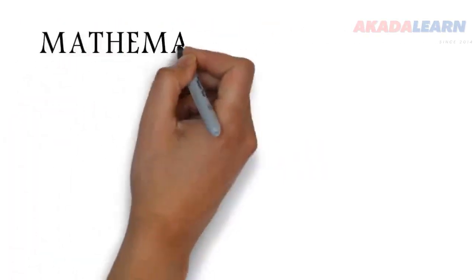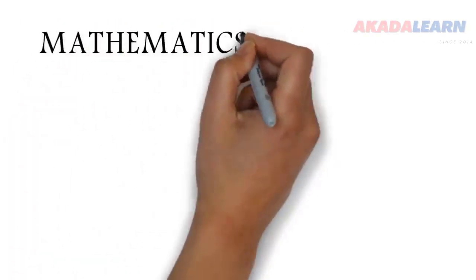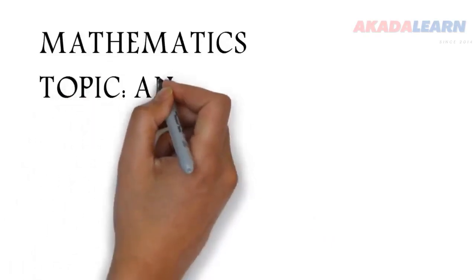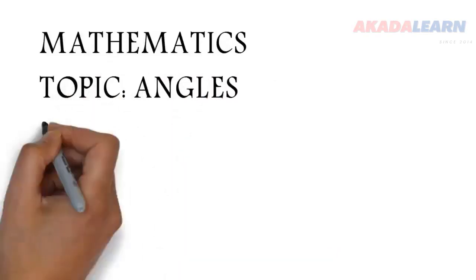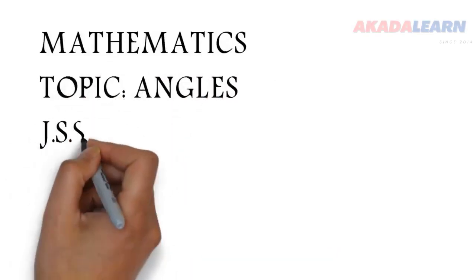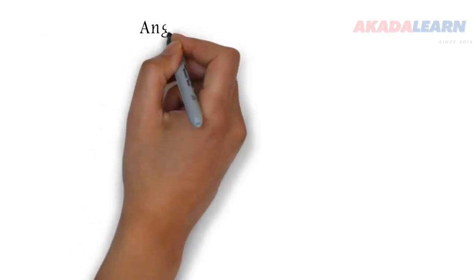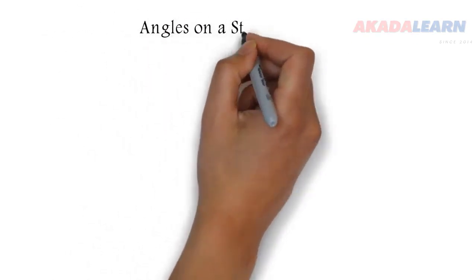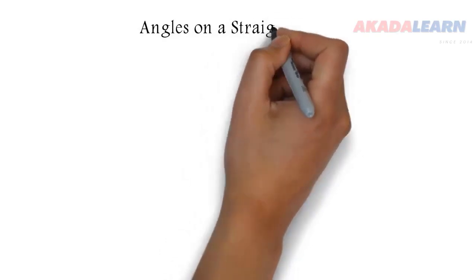Welcome to class. In this class we are going to be seeing angles as relating to a straight line, a triangle, and some other polygons. So first we start with angles on a straight line.